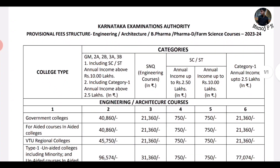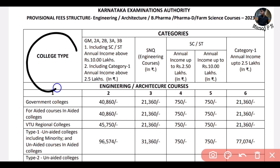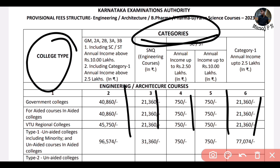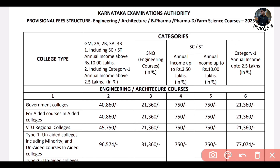Second thing — we will explain the fee structure from last year. So this is the fee structure in 2023 and 2024. For the first time, basically GM 2A, 2B, 3A, 3B including SCST annual income, including Category 1 annual income about 2.5 lakh — this is the first category. Second is the SNQ quota — irrespective of your category, or if you are SCST, probably you are at Rs. 7,500. You have to pay for it.